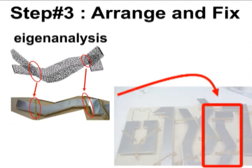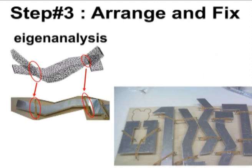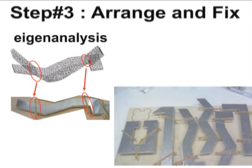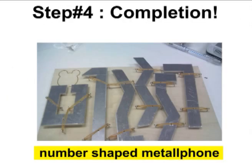Next, we fix the metal plate to a wooden board using rubber bands at points suggested by the eigenanalysis. Finally, we have a metallophone with custom-designed shapes and tones.